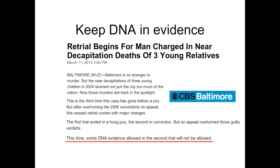The task was actually to keep DNA in evidence. The defendant had been through two previous trials. The first had ended in a hung jury, the second in a conviction, but there was an appeal that overturned those guilty verdicts. What made the case more challenging for the prosecution was that some DNA evidence allowed in the second trial would not be allowed in the third trial.